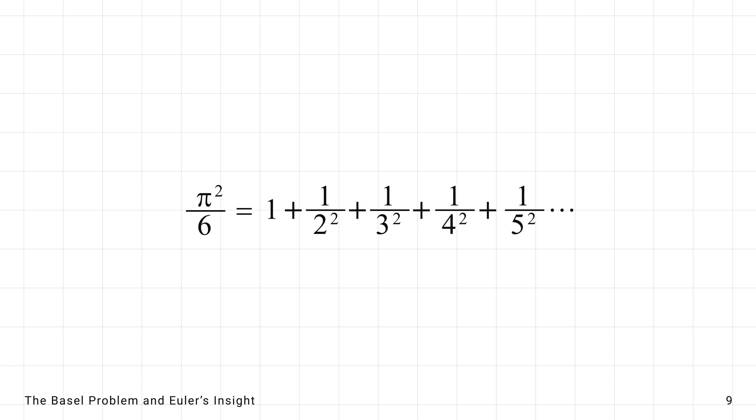Euler's work on the Basel problem revealed that the sum of reciprocals of squares of natural numbers is pi squared by 6. This surprising connection opened up a new way of linking series and pi.